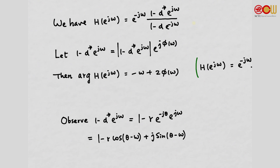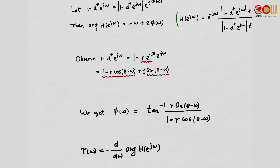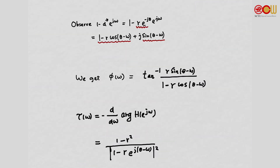Let's examine what phi(omega) is. With D = Re^{j theta}, we write the real and imaginary parts, and phi(omega) is the arctangent of the imaginary part over the real part. The group delay is defined as the negative derivative of the phase function with respect to omega. After working out the details, the group delay in closed form has (1 - r^2) in the numerator and the squared magnitude of a related term in the denominator.